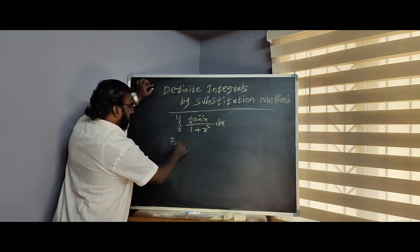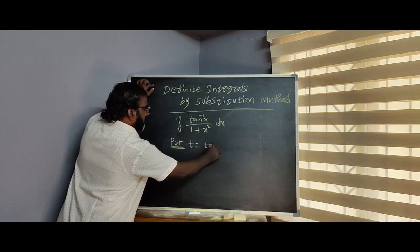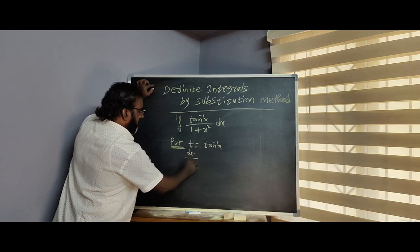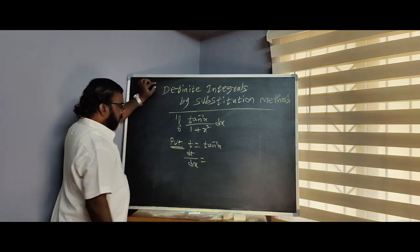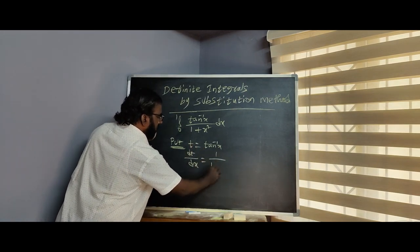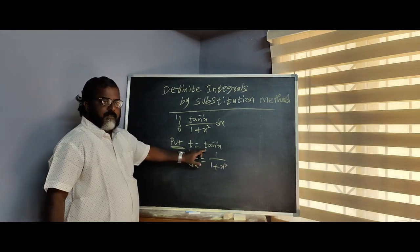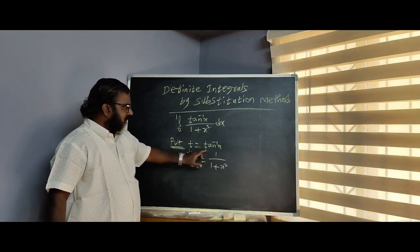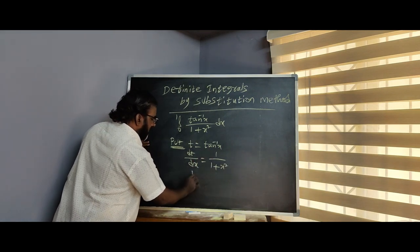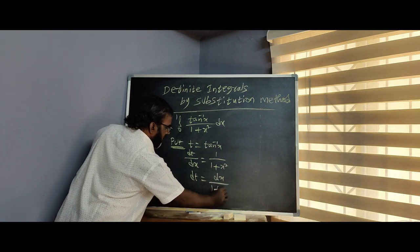We use the substitution method. Put t equal to tan inverse x. Then dt/dx equals the differentiation of tan inverse x, which is 1 by 1 plus x squared. Cross multiplying, dt is equal to dx by 1 plus x squared.